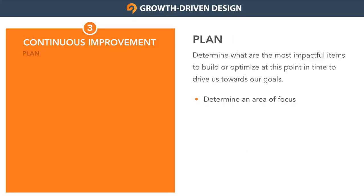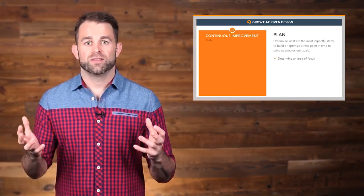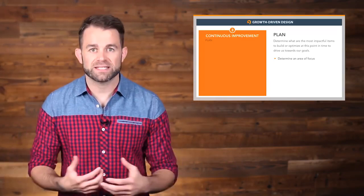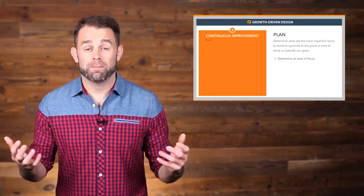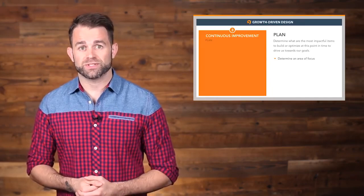In the planning step of the cycle, you'll define the most impactful items to build and optimize at this moment in time to drive us closer to our business goals. This starts by determining an area of focus that the team can rally around for their improvement efforts. Focus is absolutely key here. The challenge is that there are many areas that you could work on — things like messaging, layouts, building new pages, or optimizing existing pages.